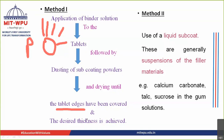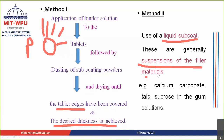The two objectives of sub coating are: first, to smoothen the tablet edges; and second, to acquire the desired thickness. This process of spraying binders and applying powders goes on continuously until both objectives are achieved. The second method is a more traditional one, in which you prepare a liquid sub coat — a suspension of the filler material such as calcium carbonate.